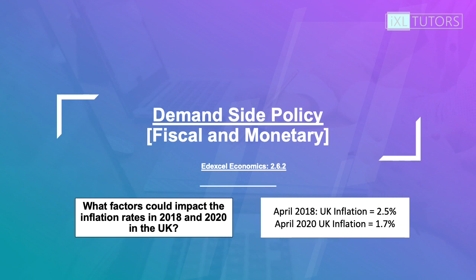Hi everyone, so today we're going to have a look at demand side policy — we're going to look at fiscal and monetary policy as well. In April 2018 the UK's inflation rate was 2.5% and in April 2020 the UK inflation rate was 1.7%. What I would like you to do is brainstorm any factors that you think could impact the inflation rates in the UK in 2018 and 2020.